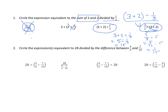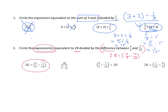Number 2 says: circle the expressions — so there may be more than one answer. We have 28 divided by the difference between 4/5 and 7/10. Writing that out: 28 ÷ (4/5 − 7/10). Difference tells us we are subtracting. Looking at the choices, one of them is correct — it's identical to what I wrote.